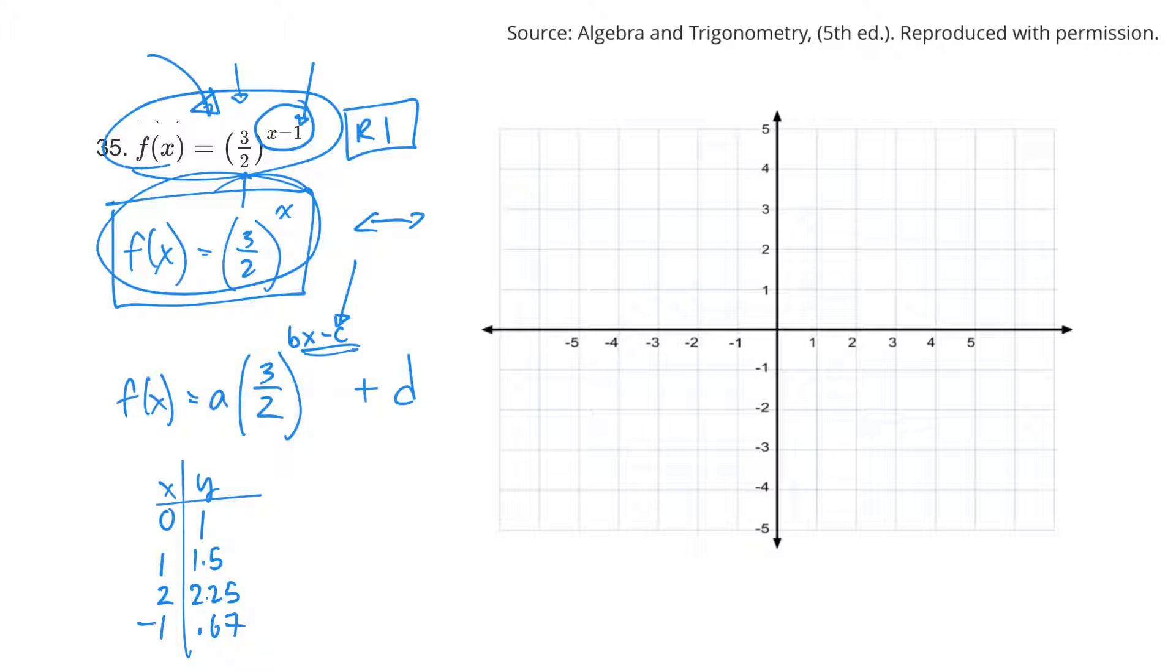And then I could graph those points. And that's just of this base one here. So that would be of just the 3 halves to the x. So it'd be 0 and 1. There's a point. 1 and 1.5, right there. 2 and 2.25, right about there. Negative 1 and 0.67. So right about there.